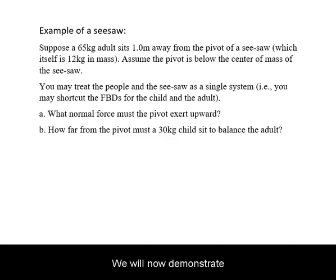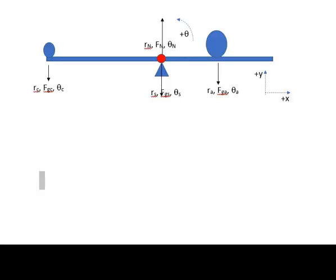We will now demonstrate Static Equilibrium on the simple problem of the seesaw. We start by drawing the free body diagram. The child is at one end, the adult is at the other. The seesaw beam itself has weight. There is a normal force by the pivot on our system.